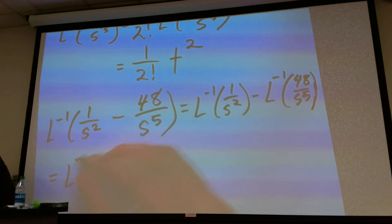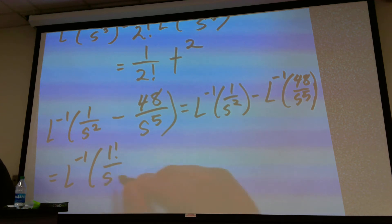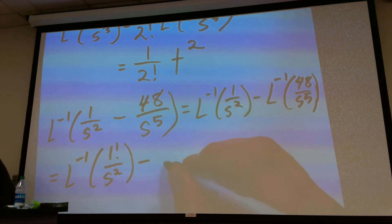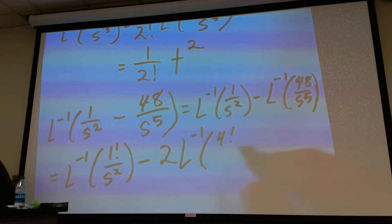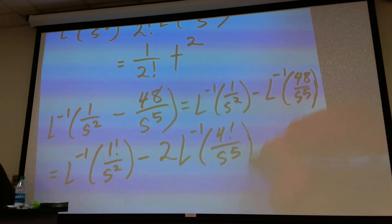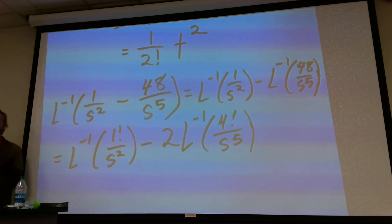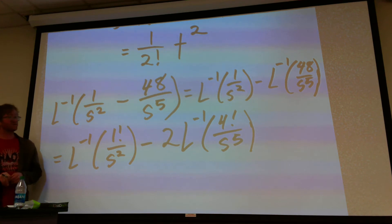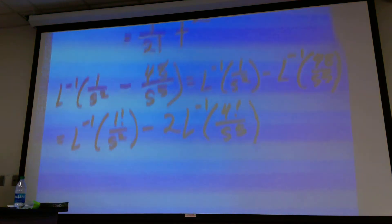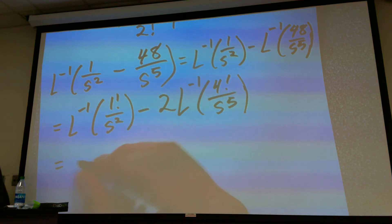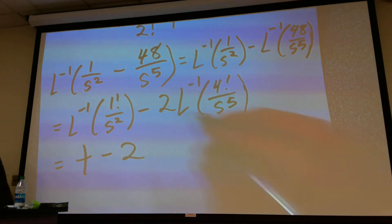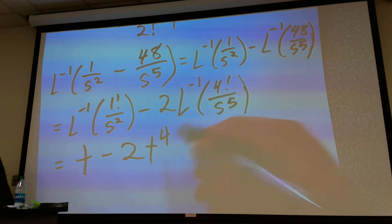So that's going to be L inverse — well, 1 factorial is just 1, we don't have to adjust that at all. And then this is minus 2 times L inverse of 4 factorial, which is 24, divided by s to the fifth. So we just pull the 2 out of that thing. At this point we can say this is just going to be t to the power of 1, and then minus 2 times t to the fourth power.